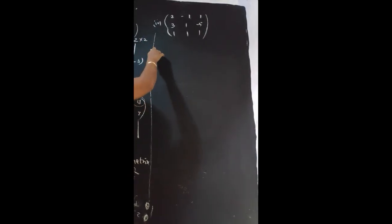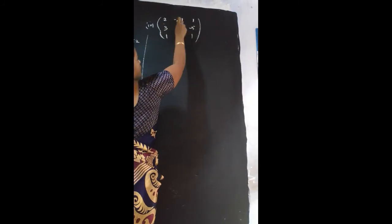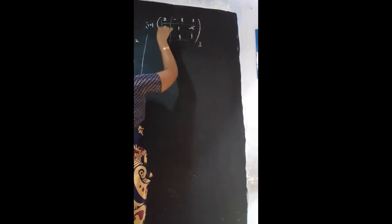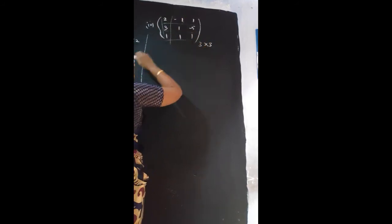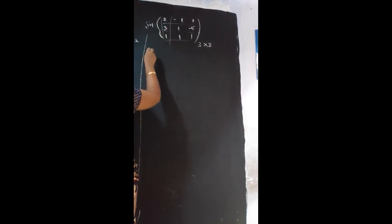Up to this we will see 2 by 2 matrix. Now we are going to see 3 by 3 matrix of rank. Here, how many rows are there? 3 rows and 3 columns are there. So this order of this matrix is 3 by 3. Now we will give name for this one is D.